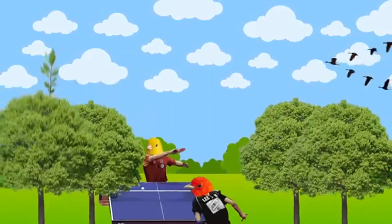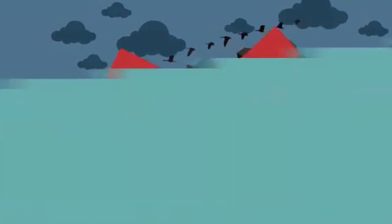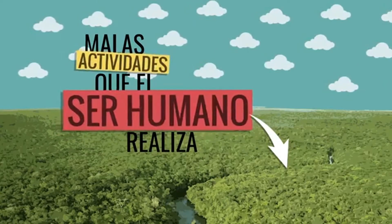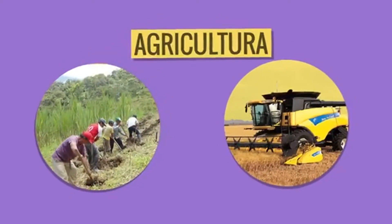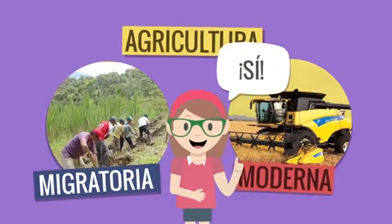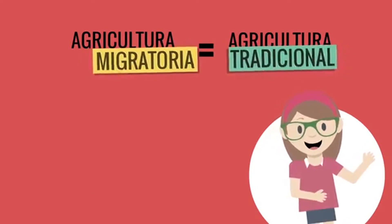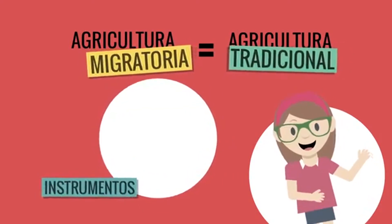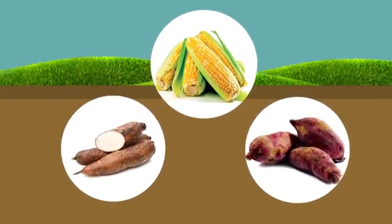Ahora, de lo bueno y bonito que tiene la selva para nosotros, pasaremos a desarrollar algo que está muy mal y que por consecuencia de los hombres no debería hacerse: las malas actividades que realiza el ser humano en el interior de la selva. Al interior de la selva viven poblaciones nativas dedicadas a la caza y a la agricultura. Con respecto a la agricultura, encontramos dos tipos: la migratoria y la moderna. La agricultura migratoria emplea instrumentos sencillos como palos de cavar, machetes, y cultiva yuca, maíz y camote, lo que se conoce como policultivo.